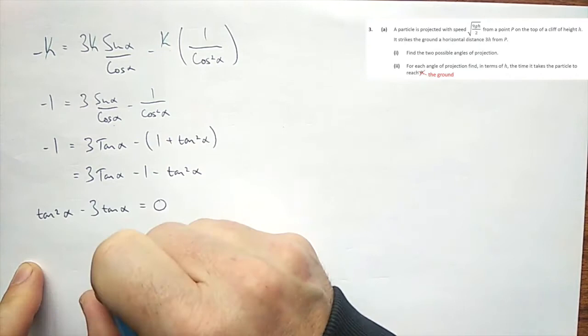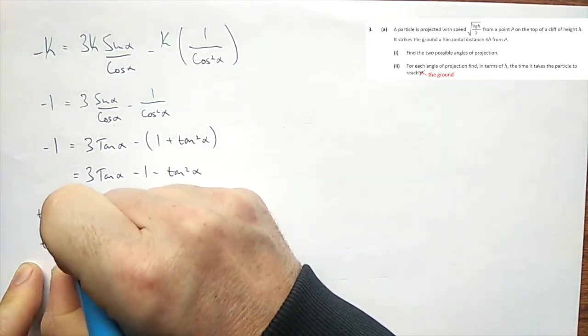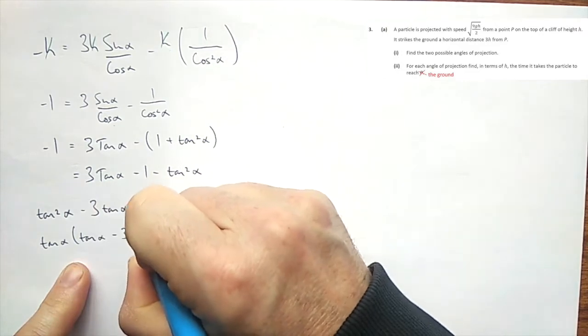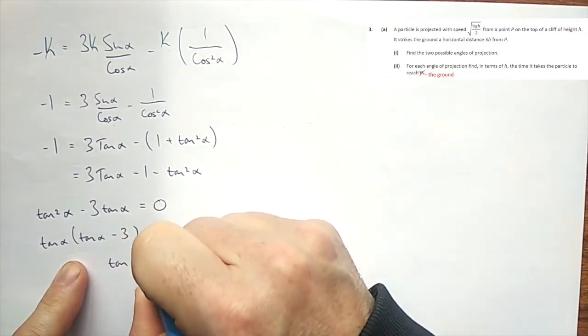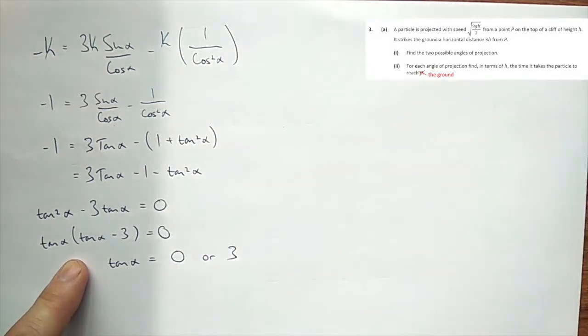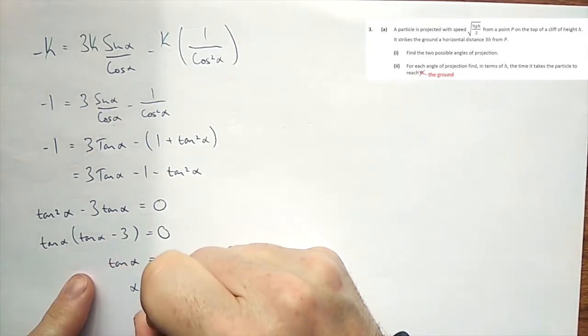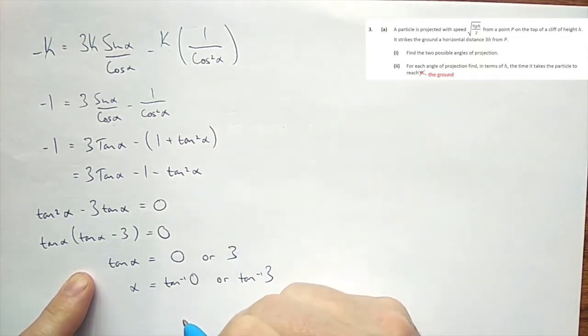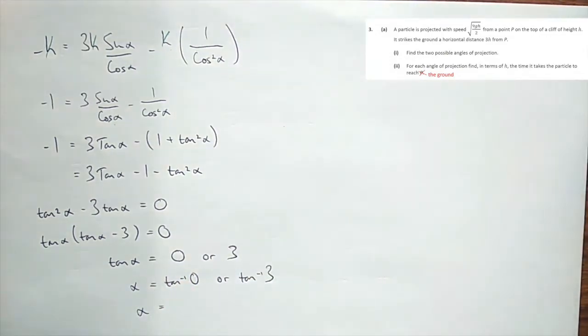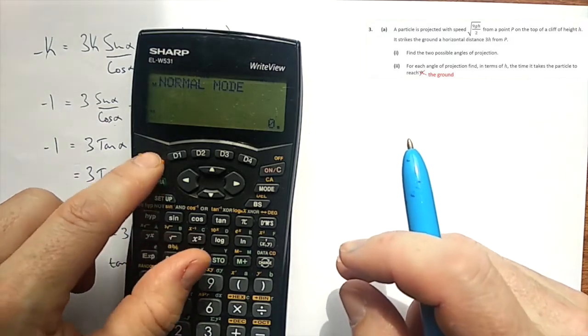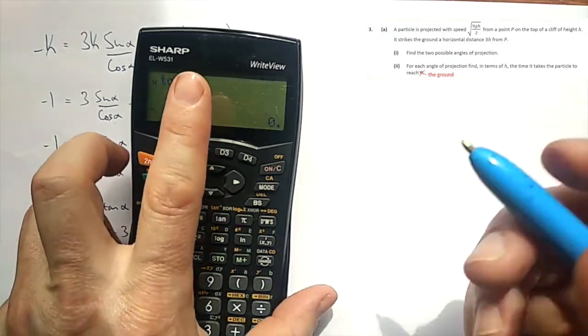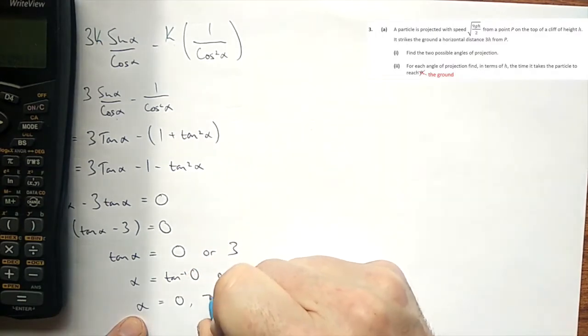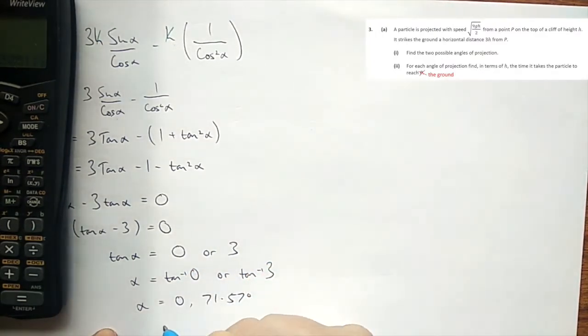So this is actually quite straightforward to solve. We basically have tan alpha times tan alpha minus 3. In this case, tan alpha will equal either 0 or 3. Flipping that around, that means alpha equals tan inverse of 0 or tan inverse of 3. So alpha equals, I'm going to stick this into our calculator. Now you may or may not know the tan inverse of 0 but that's fine. We'll stick it in. Tan inverse of 0 takes a moment to check, it's of course 0. And then tan inverse of 3 is 71.565. So alpha is 0 or 71.57 degrees. Those are our two possible angles.